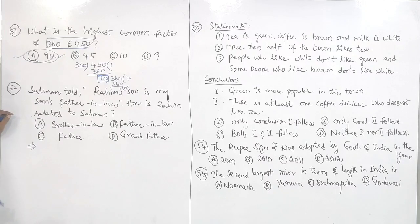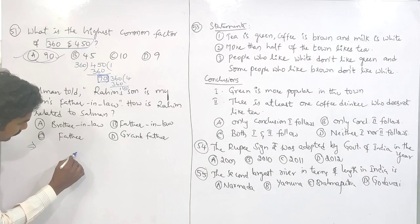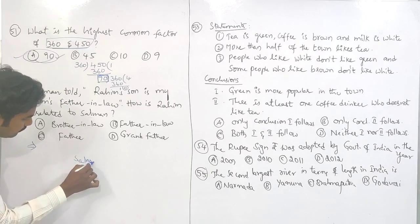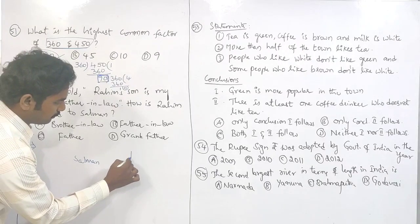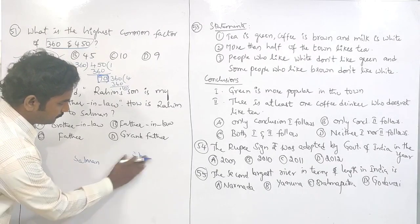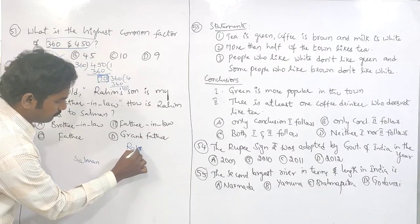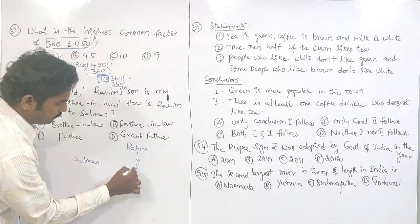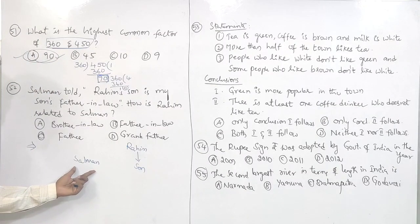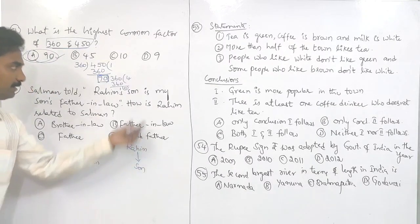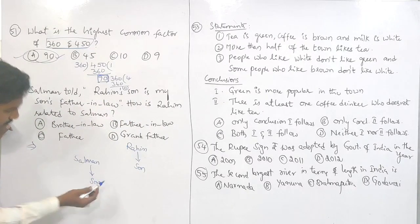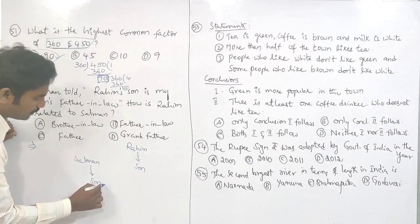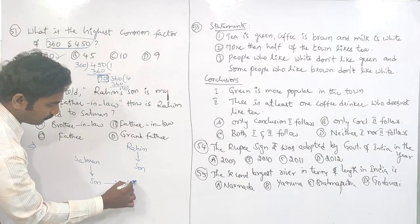This question is related to blood relations. Salman told — what is Salman telling here? Salman is telling: Rahim's son is my son's father-in-law. Who is father-in-law? Wife's father.